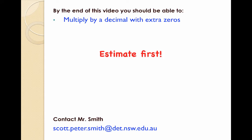And that's it. Hopefully now you know how to multiply by a decimal even when they got extra zeros. A really good tip is to estimate first so that you know that your answer is going to be roughly what you thought it was before you began. Good luck.